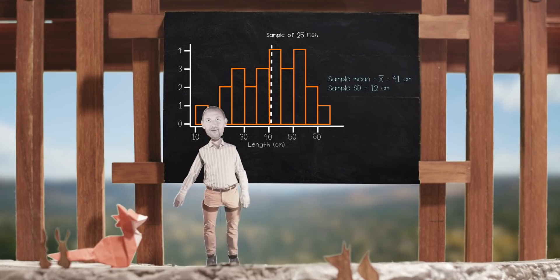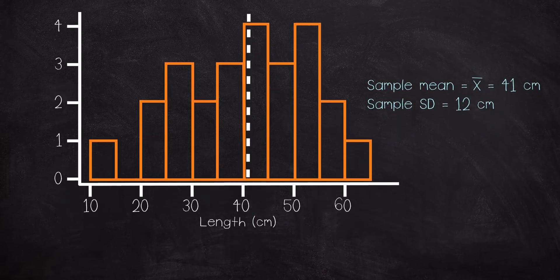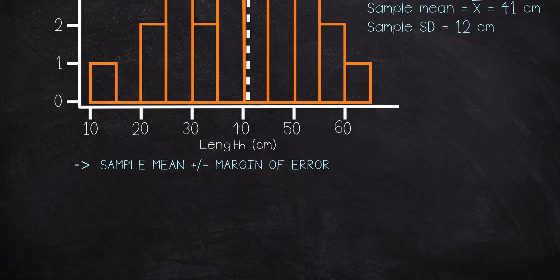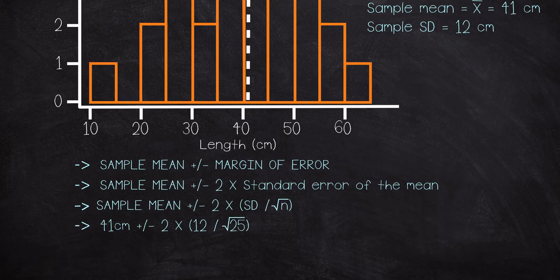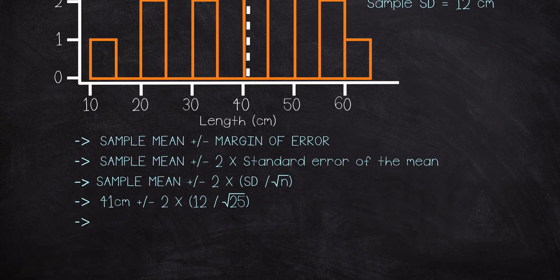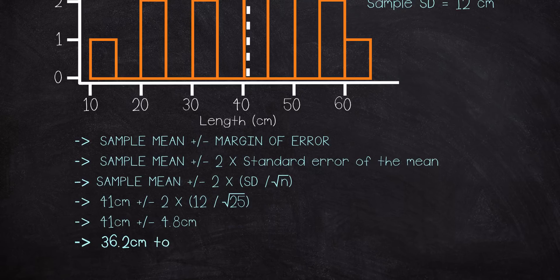Now, your best guess at the true mean length of all the fish in this lake is 41 centimeters. But this, my friends, is where we can bring in our margin of error. We can start from our sample mean and reach out two standard errors, which is our margin of error here, on each side of the estimate to create a 95% confidence interval. We would then say that we're 95% confident that the true mean length of fish in this lake is between 36.2 to 45.8 centimeters. And this, my friends, is our confidence interval.